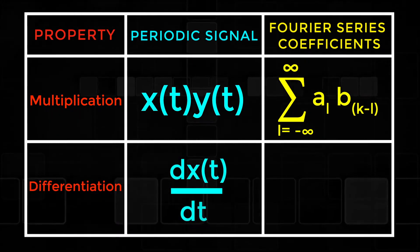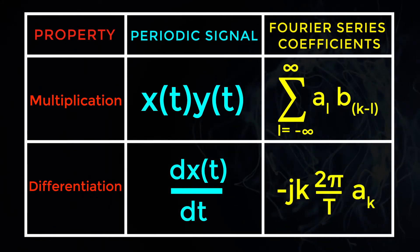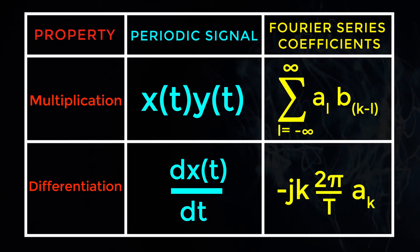Differentiation: For periodic signal dx of t by dt, Fourier series coefficient is jk into 2pi by T into ak.